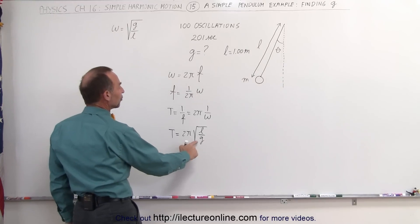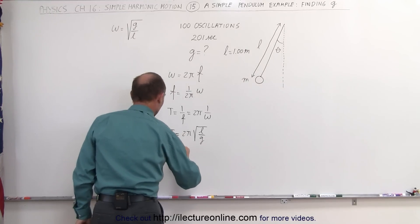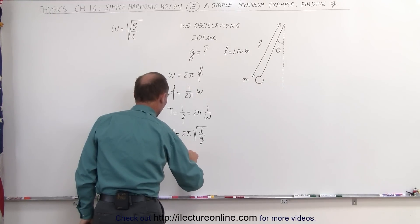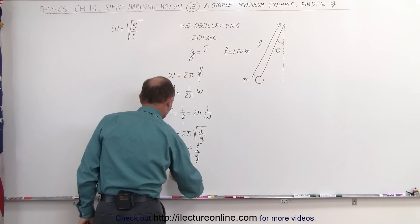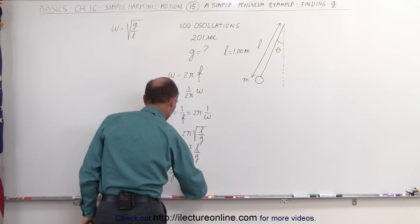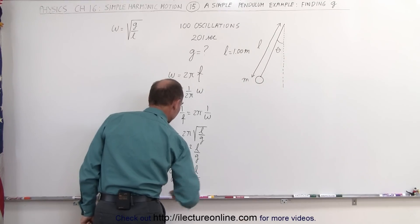Solving this equation for g, we can square both sides. T squared is equal to 4π² times L divided by g, or we can say that g is equal to 4π² times the length of the pendulum divided by the period squared.